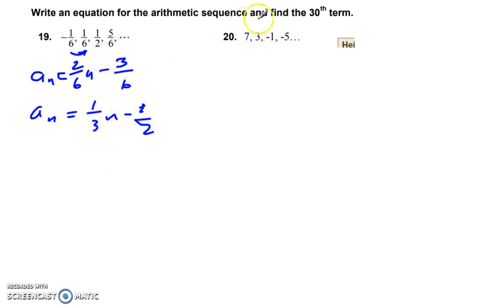And then plug in here the 30. So a of 30 is equal to 1 third times 30 minus 1 half. And that gives me 10 minus 1 half. And that is 9 and 1 half. So that's the 30th term. Alright. Same procedure for number 20.